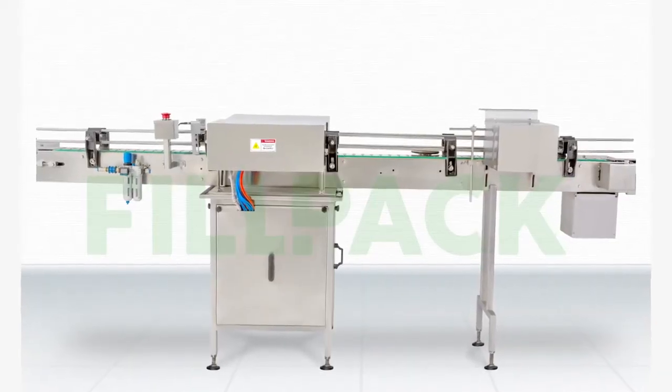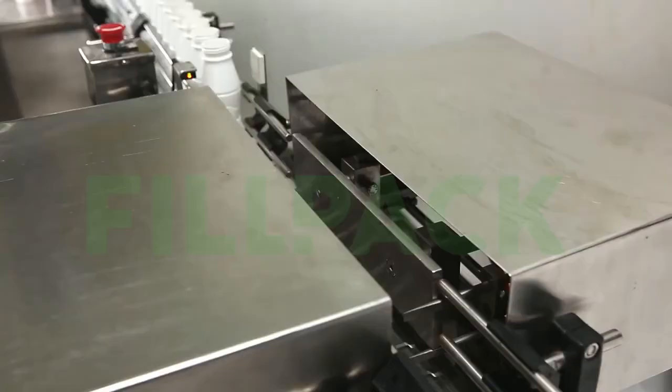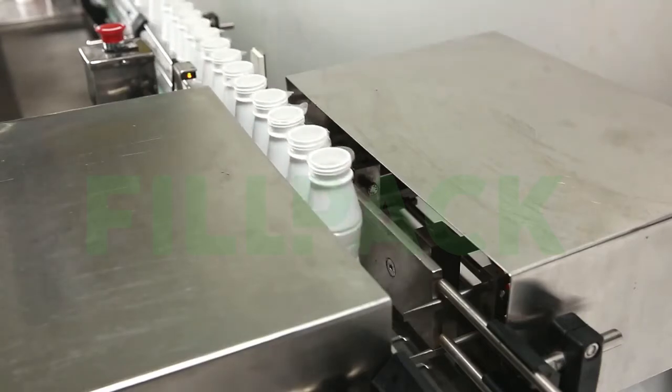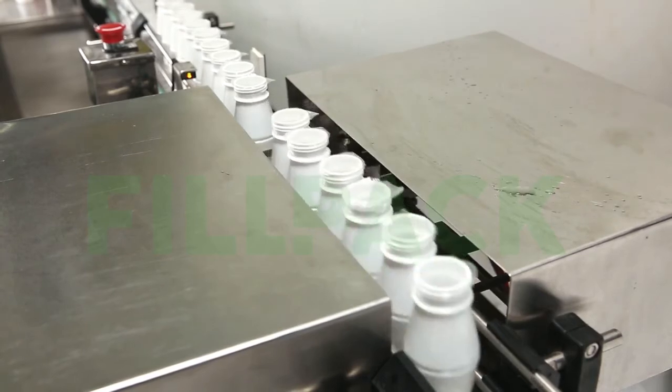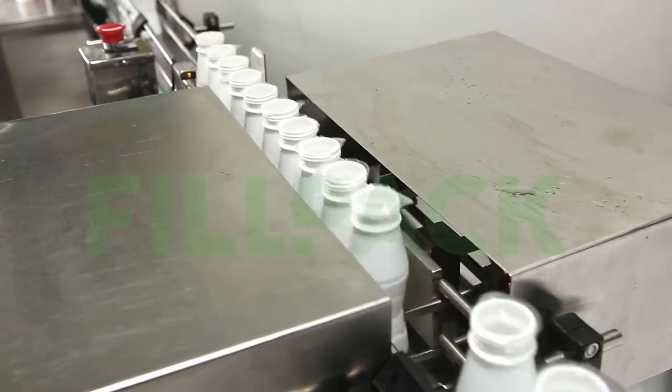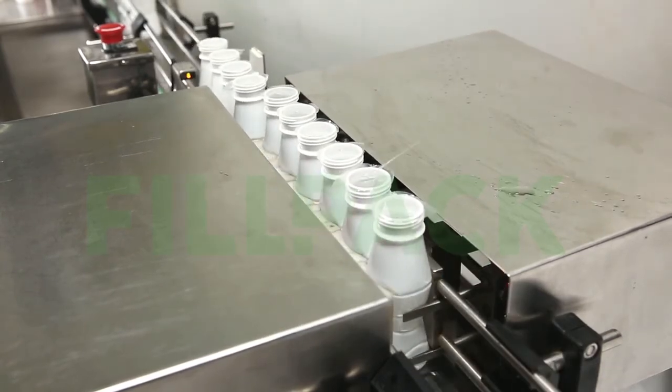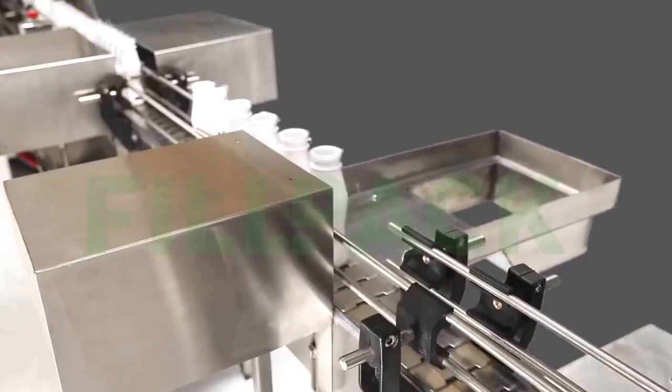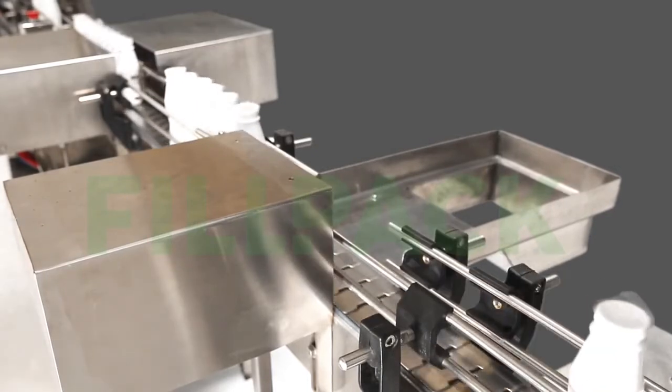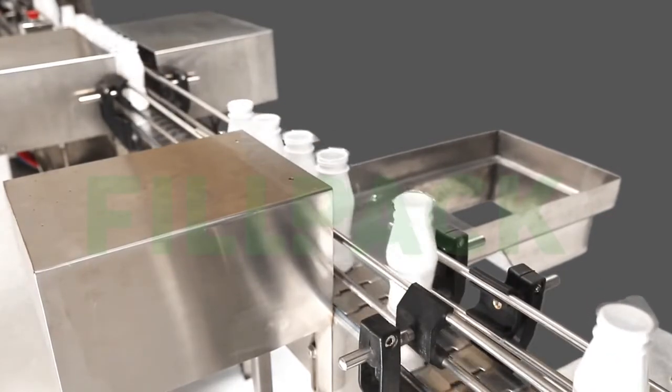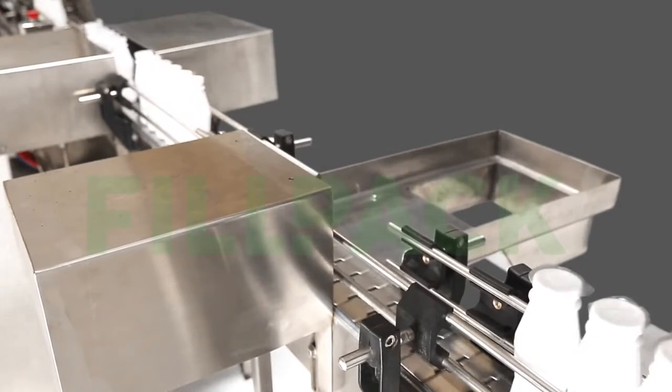The sealed bottles come to the leak testing device. Here, each bottle will be pressed through a pneumatic cylinder with predefined pressure for leak testing. The leaked bottle will be marked with a sensor, then the bottle having a leakage will be thrown out of the line with the help of a rejection unit and sensors fitted in the leak testing device.